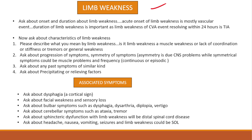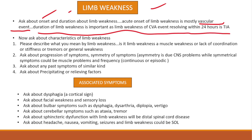Onset and duration are important in the sense that acute onset of any weakness is most likely a vascular phenomenon — a vascular event like a cardiovascular accident. The duration of the limb weakness is also important: if it is a unilateral weakness occurring and then resolving within 24 hours, it can be a TIA — transient ischemic attack. That is why onset and duration are important.